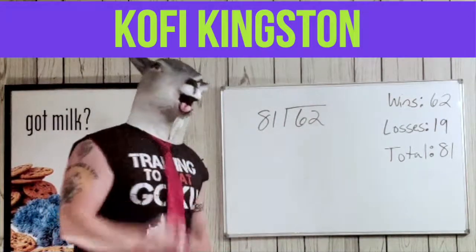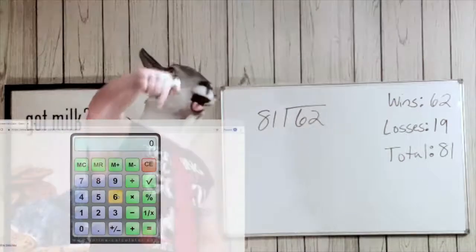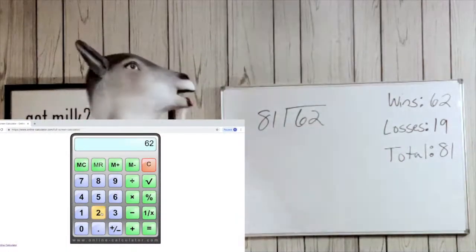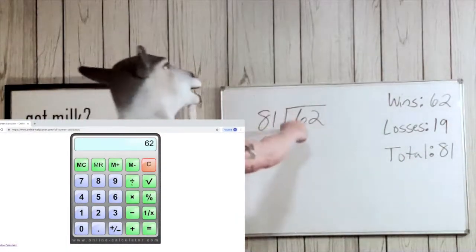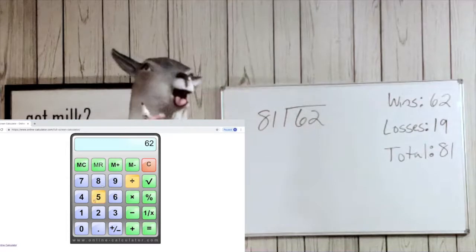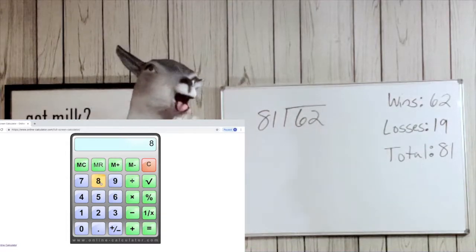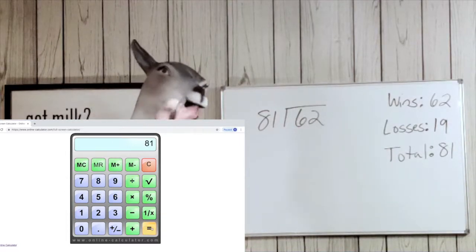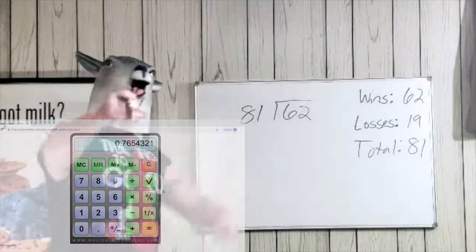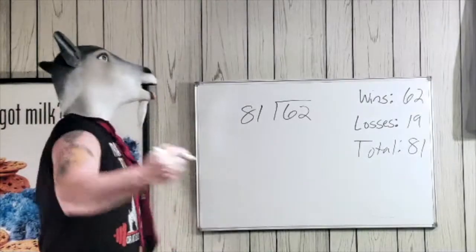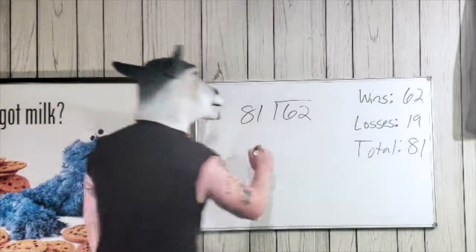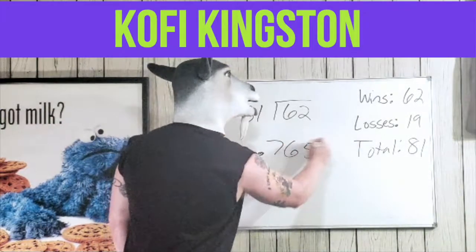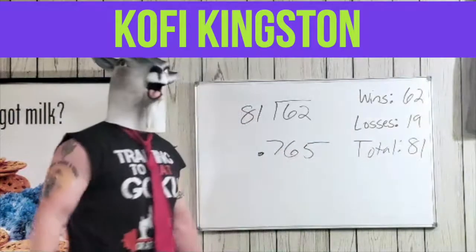This is a percentage video, so what I want you to do is get that calculator — I'll put one right down there. Punch in 62 first, then divide it by 81. And there you go — you get 0.765.